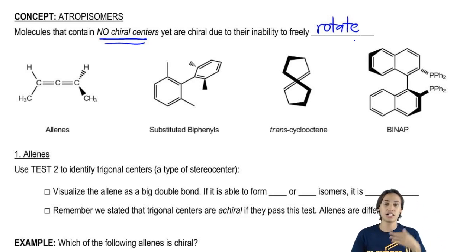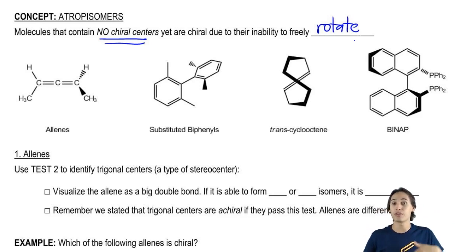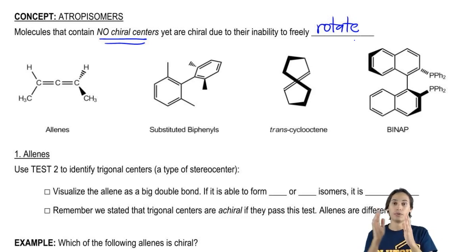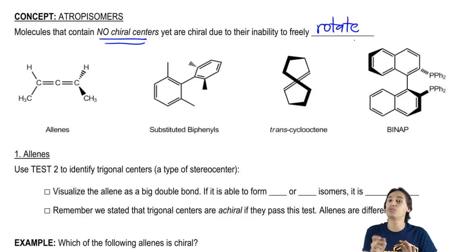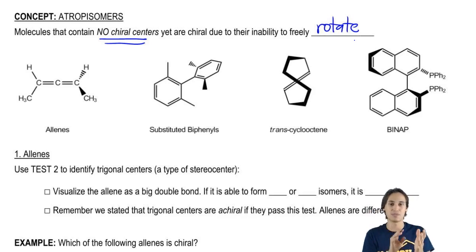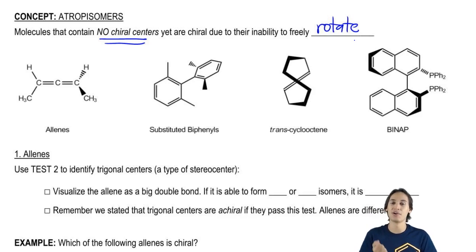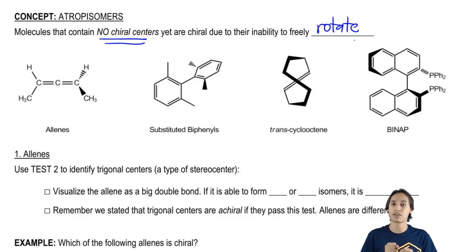Trans-cyclooctene is actually a molecule I was just recently talking about — how it can form the cis version and the trans version. It turns out that the trans version, because it can't rotate, can actually form a right-handed version of this twisted, messed-up thing and a left-handed version. It's a very peculiar looking molecule, but it is also chiral because of lack of rotation.